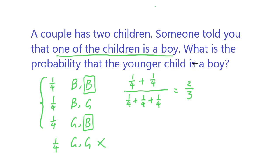But knowing that one of the children is a boy, you eliminate this last scenario, which raises the probability of the younger child being a boy to two over three. Thank you.